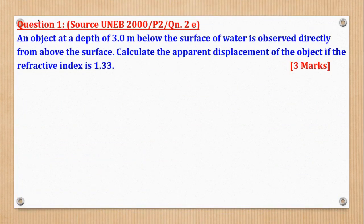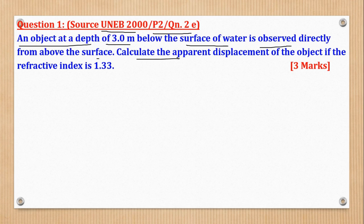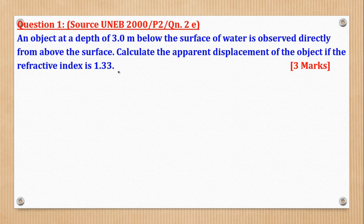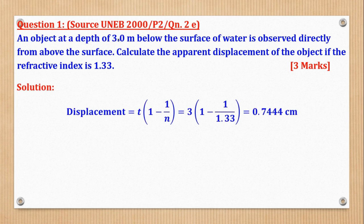Question 1 from UNEB 2000 Paper 2: An object at a depth of 3 metres below the surface of water is observed directly from above. Calculate the apparent displacement of the object if the refractive index of water is 1.33. We have the real depth and the refractive index, so we can apply D = T(1 − 1/N) to find the displacement.